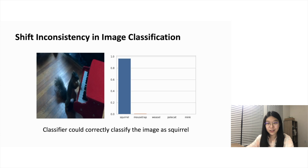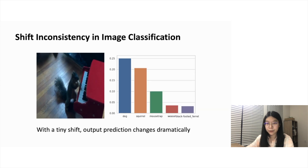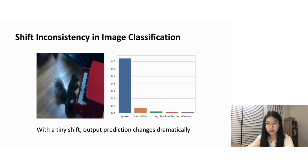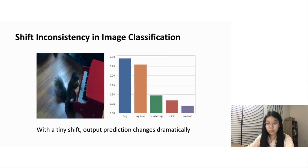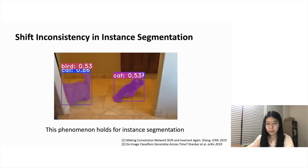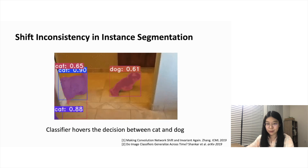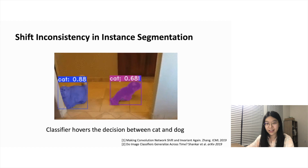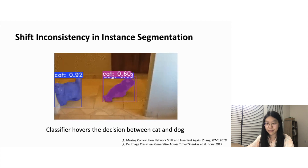Given an input image, a classification network will predict the probability of each class according to its content. The classifier could correctly classify the cute animal as squirrel as shown in the image. However, with a tiny shift on the input image, the output prediction will change dramatically. The top predictions iterate between squirrel and dog. Prior works by Zhang and Shankar have observed this phenomenon in image classification as well as object detection. We observe the shift-inconsistent effects also occur in pixel classification tasks, such as instance segmentation. For example, the classifier hovers the decision between cat and dog for the right animal.